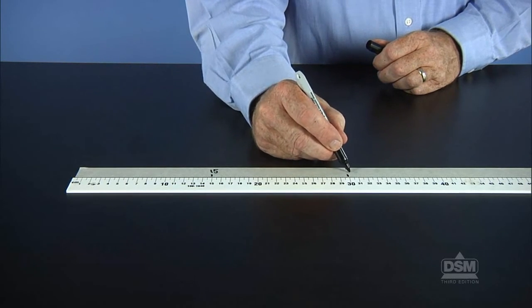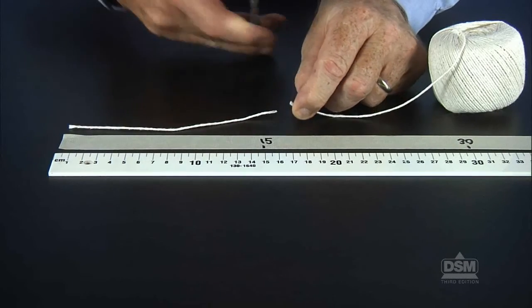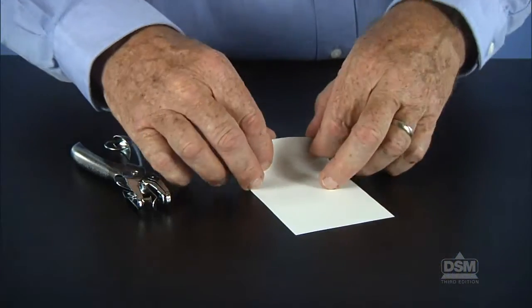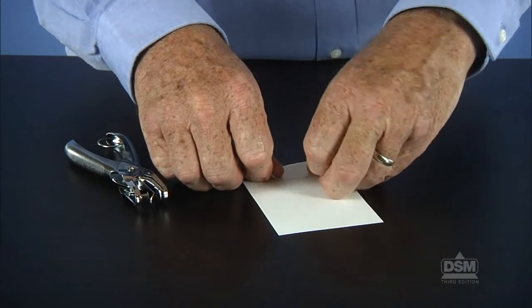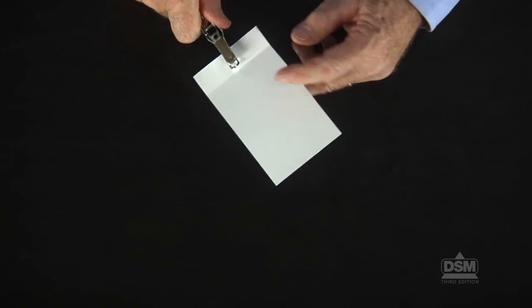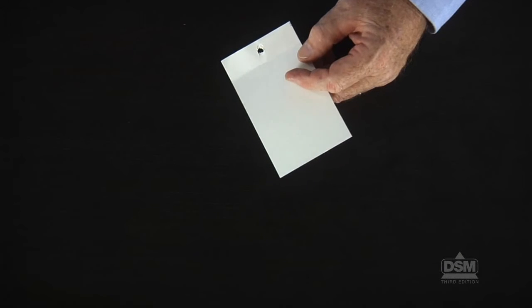Cut a piece of string 16 centimeters long for each team. Each team will also need one tractor sled made from an index card. To make a sled, fold one end of the card to form a 2-centimeter flap and punch a hole in the middle of the flap about one centimeter from the edge.